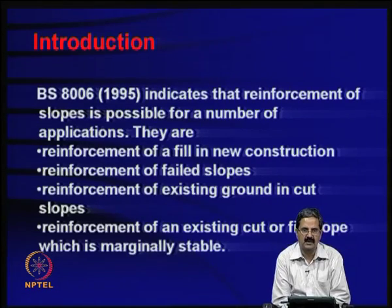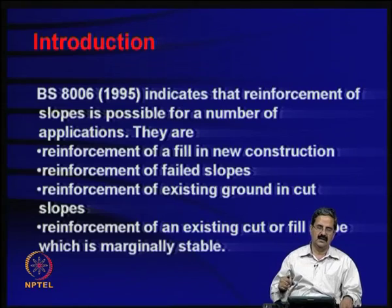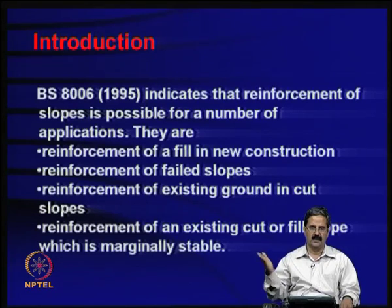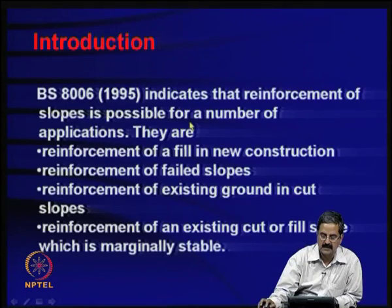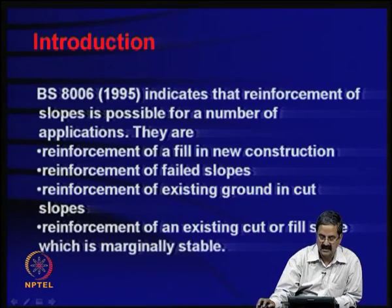Because of BS 8006, there has been a lot of advancement in constructing reinforced walls and slopes. The difference between a slope and a wall is that the wall is vertical whereas the slope has inclination varying from 90 degrees to about 35 degrees or the angle of repose. If the slope angle approaches the angle of repose, the slope is somewhat stable, but as it approaches vertical, the problem becomes unstable. BS 8006 indicates reinforcement of slopes is possible for a number of applications.